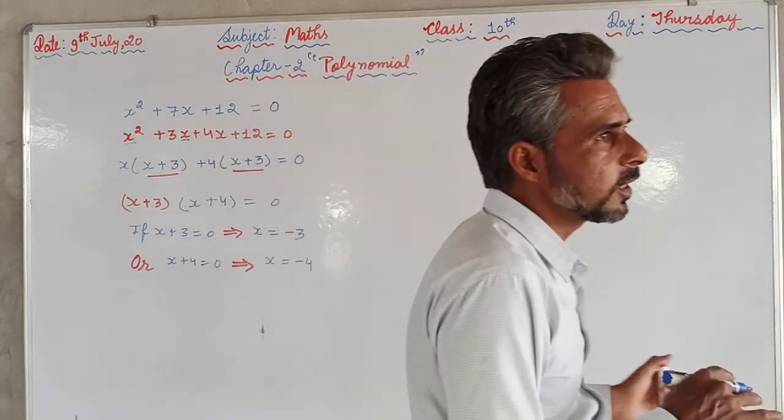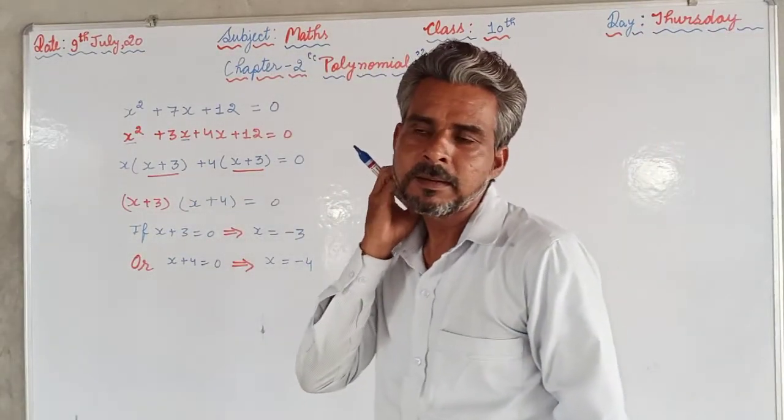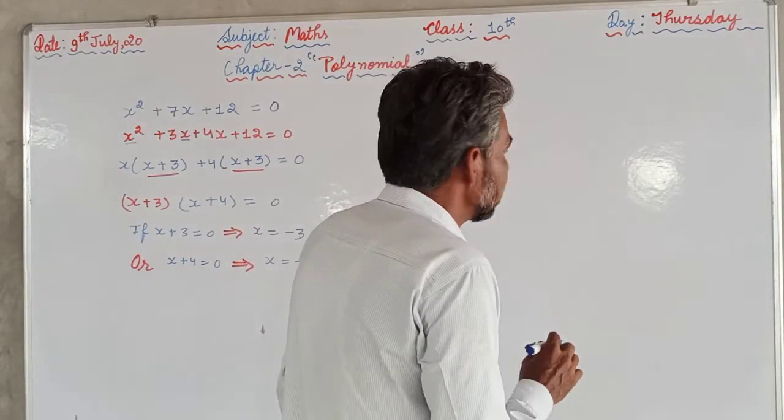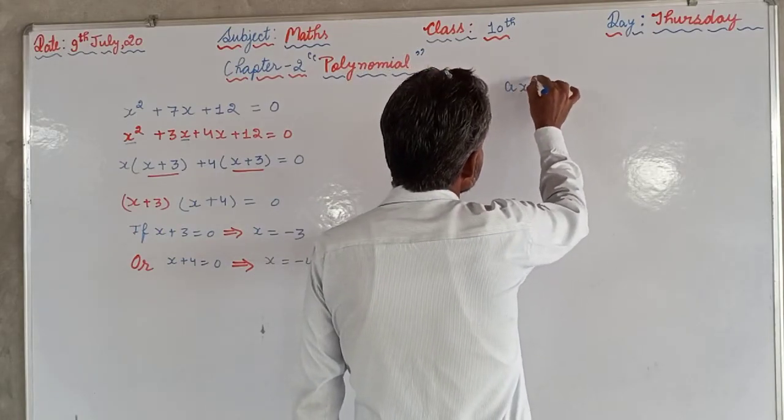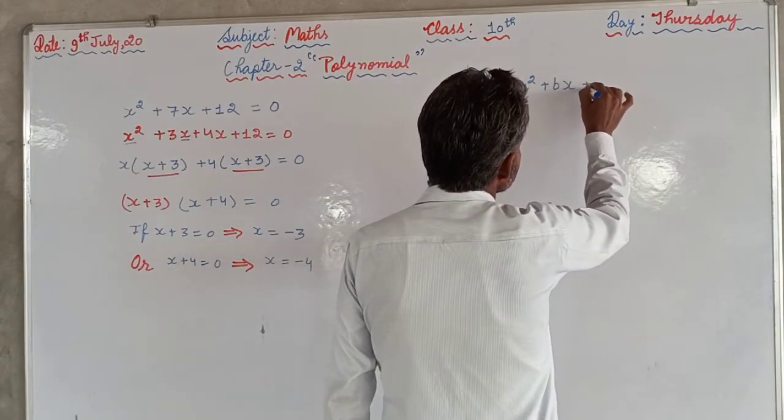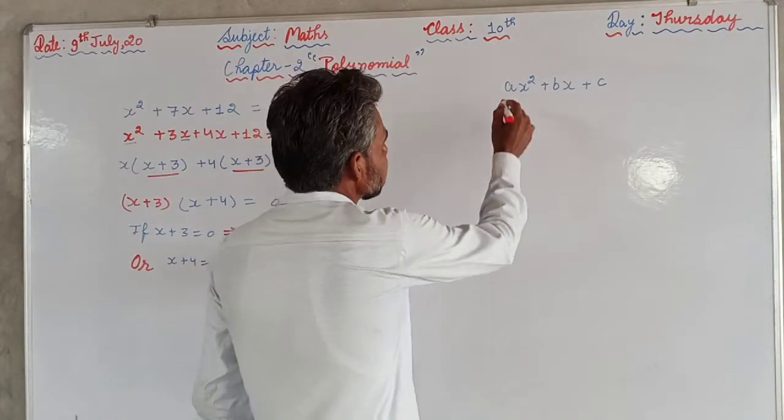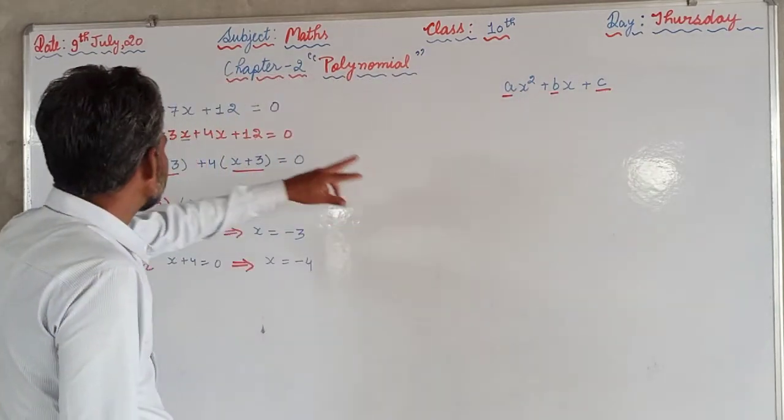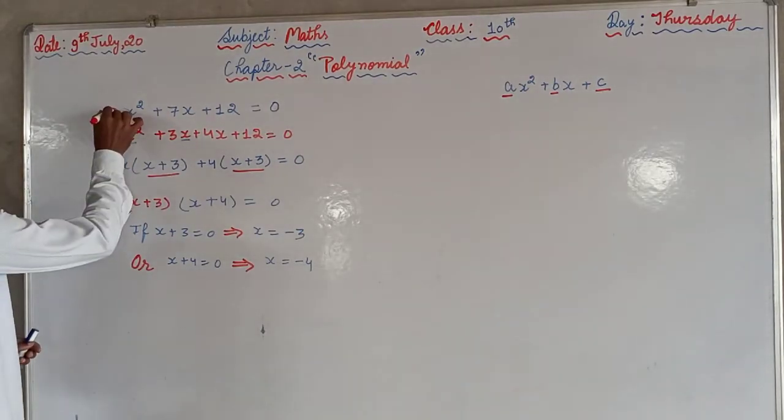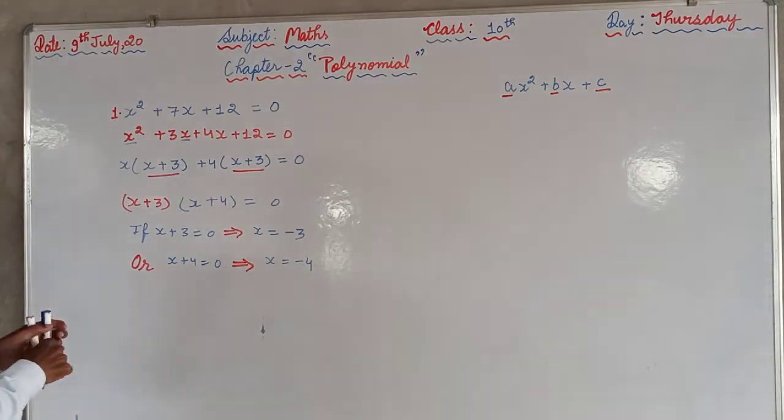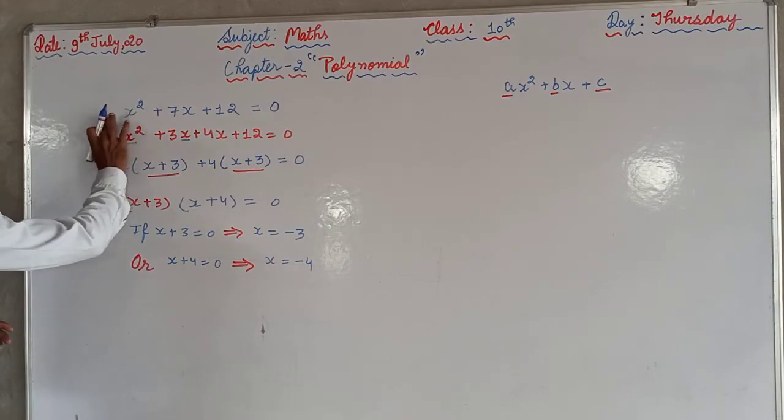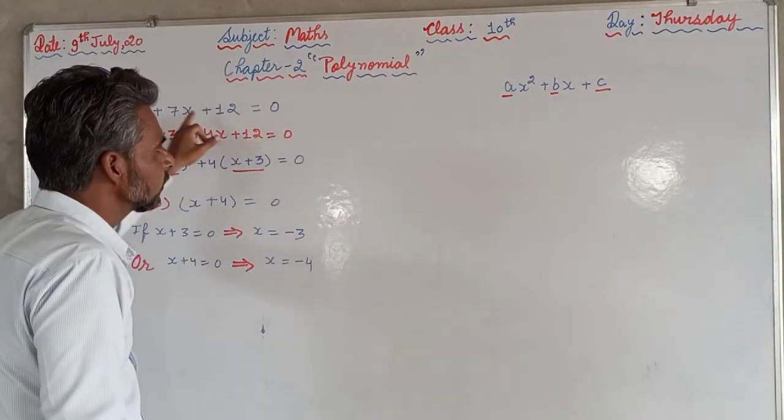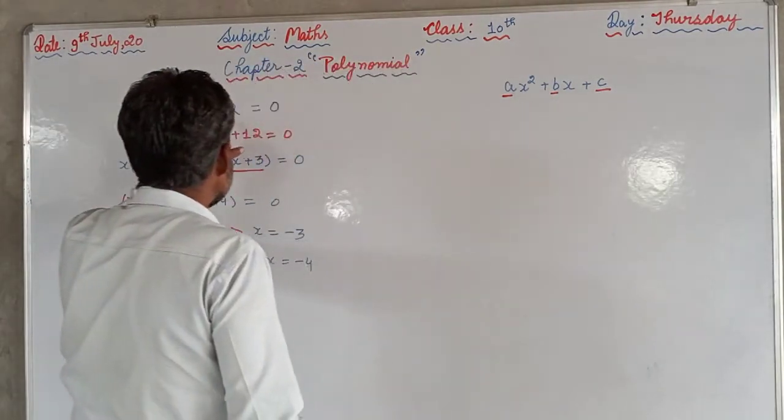Now some relation is also there between the coefficient and the roots of the polynomial. General form of a quadratic polynomial is ax² + bx + c. a is the coefficient of x², b is the coefficient of x, and c is the constant term. Here a equals to 1, one x². So a's value is 1. b's value is 7. c, the value of c is 12.